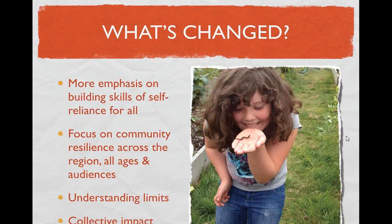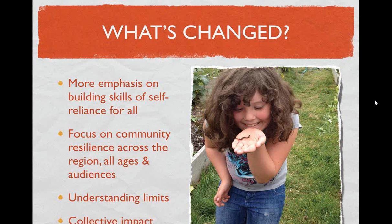What's changed? As we've gone down the road three to four years, we have a lot more emphasis on building skills for everybody. We're talking a lot more about community resilience across the region, all ages, all audiences, in the schools — building those skills that used to be common. We've noticed our kids are hungry to learn how to cook, and so are our adults. We're also understanding our limits as an organization. And I think we began this conversation and it had a ripple effect — now we're noticing a lot of other groups picking up and starting to do many of the same things we had started. I like the term collective impact because that's making real change happen.